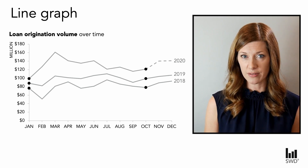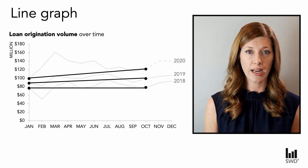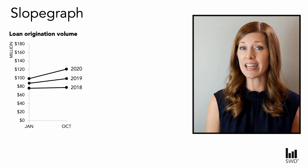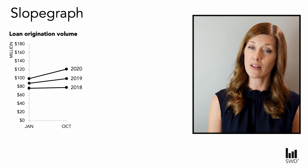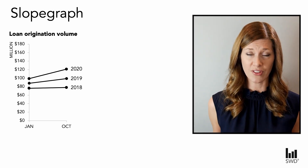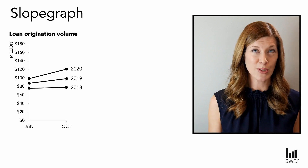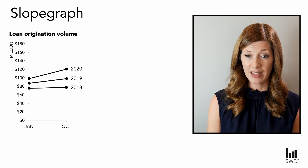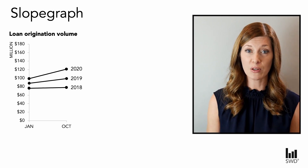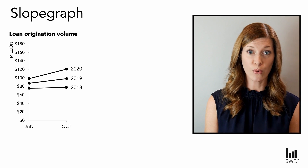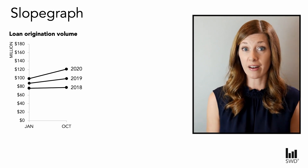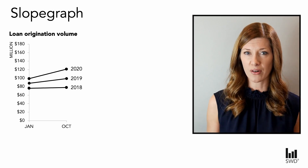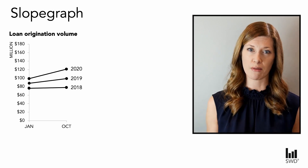Let's shift gears and say we don't care about all of this monthly variability — we really just want to understand how we look in October of this year versus the beginning of the year, and compare that to prior years. Emphasizing those points, October versus January, we can draw some lines, compress the graph, get rid of the monthly detail, and now we have what is known as a slope graph — really just a fancy word for a line graph that only has two points. So here we can see that the increase in monthly volume between January and October was greater in 2020 than in prior years.